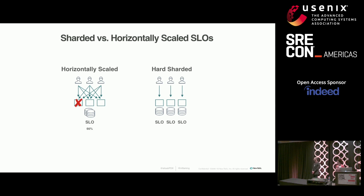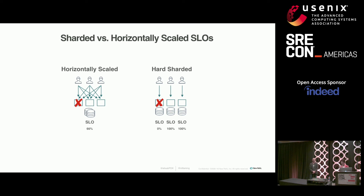This is a very important difference between SLIs for horizontally scaled systems and those that are hard sharded. In a horizontally scaled system, if you lose one out of three nodes, you're seeing a 33% error rate and you can anticipate that two thirds of user requests are still being handled. In a hard sharded system, when you lose one out of three nodes, statistically that's still 33% — however, what's really happening is some of your customers are seeing a 100% error rate while other customers are seeing a 0% error rate. There's a really big difference between a third of your customers being completely down and all of your customers being degraded. So we measure SLIs and SLOs separately for each logical instance of a system — in this case, for each shard.